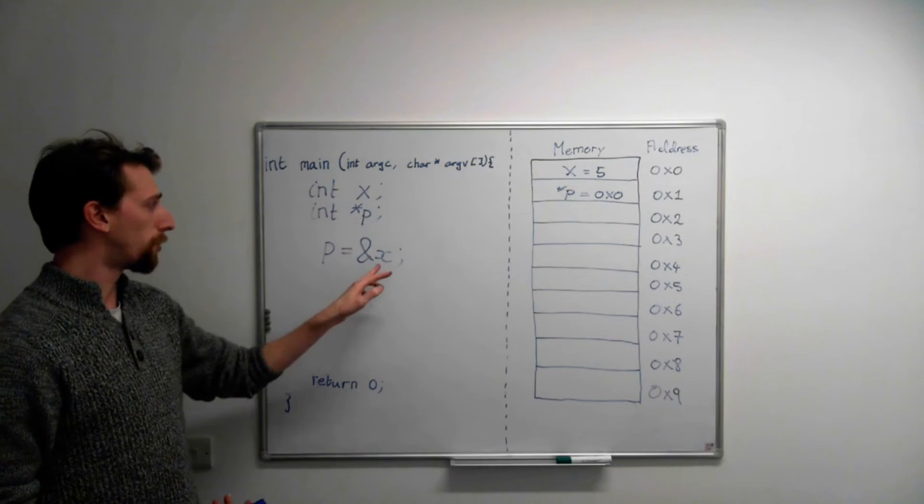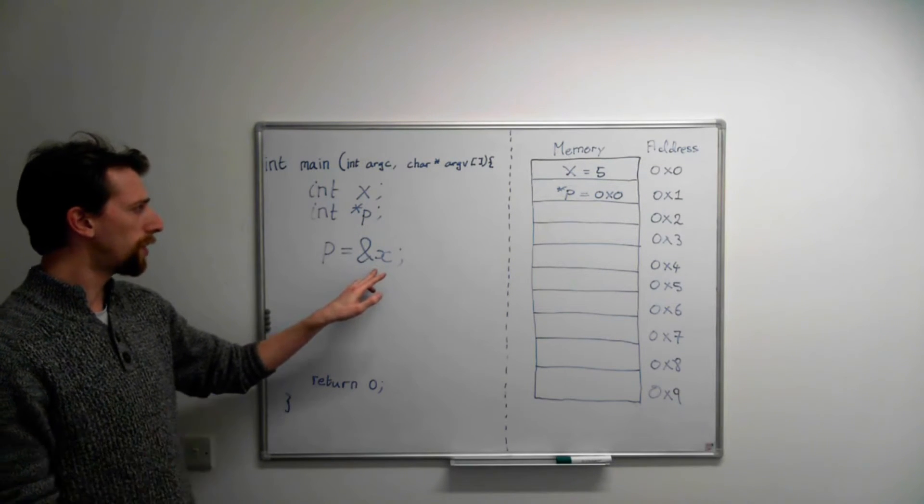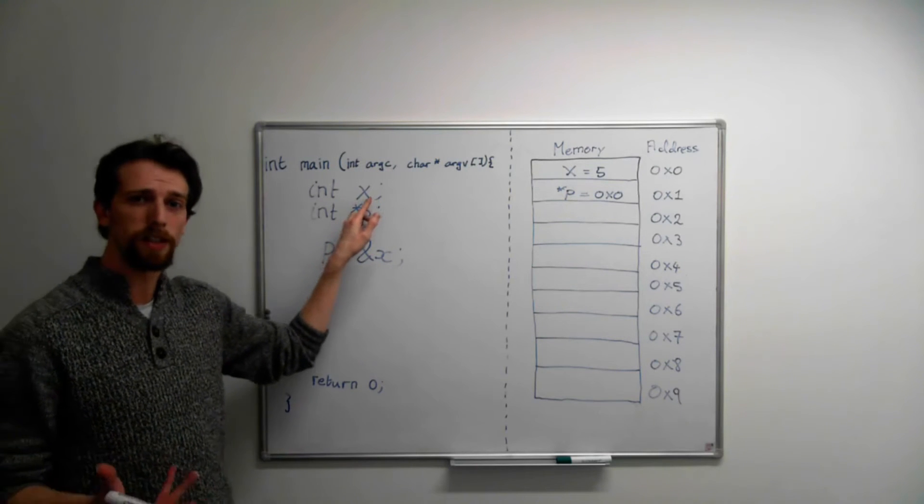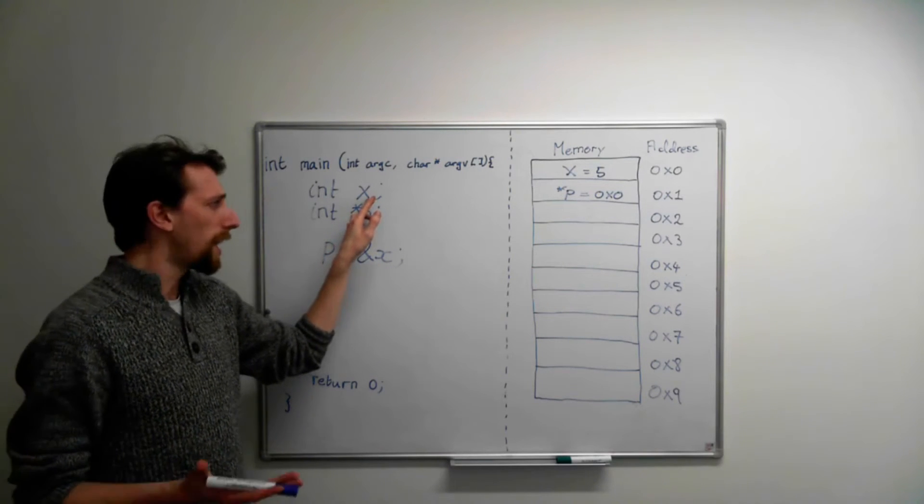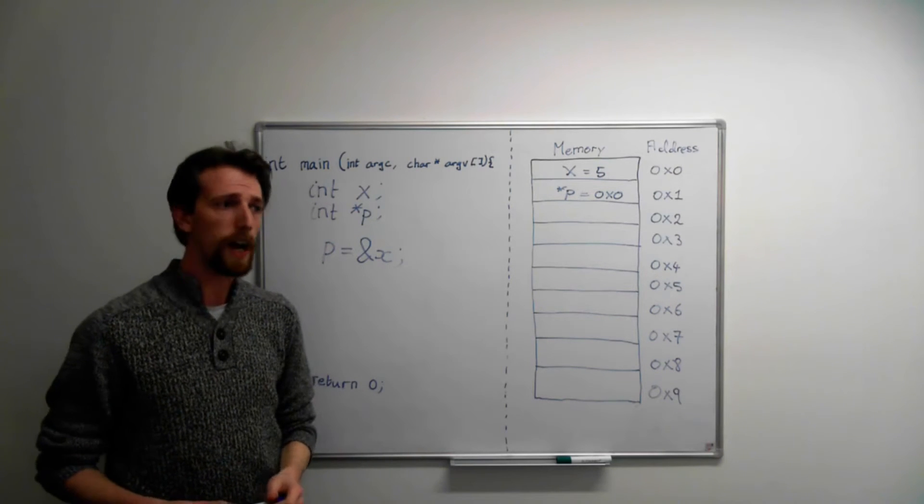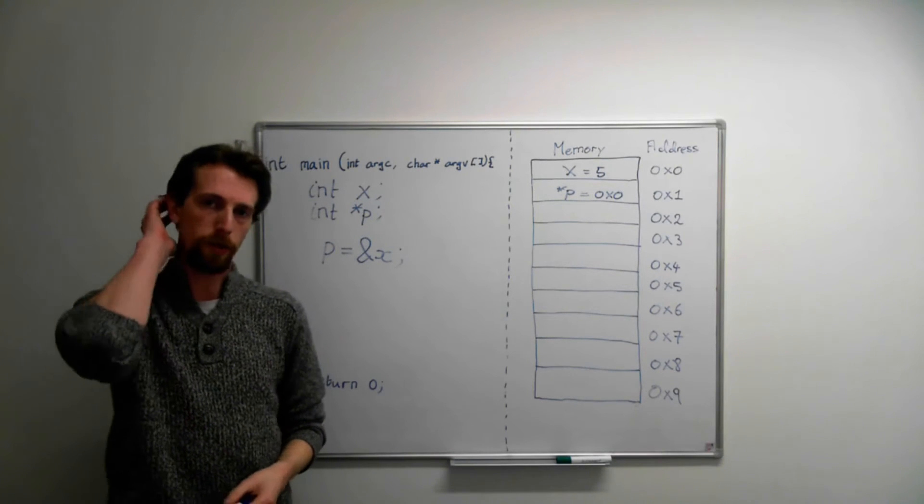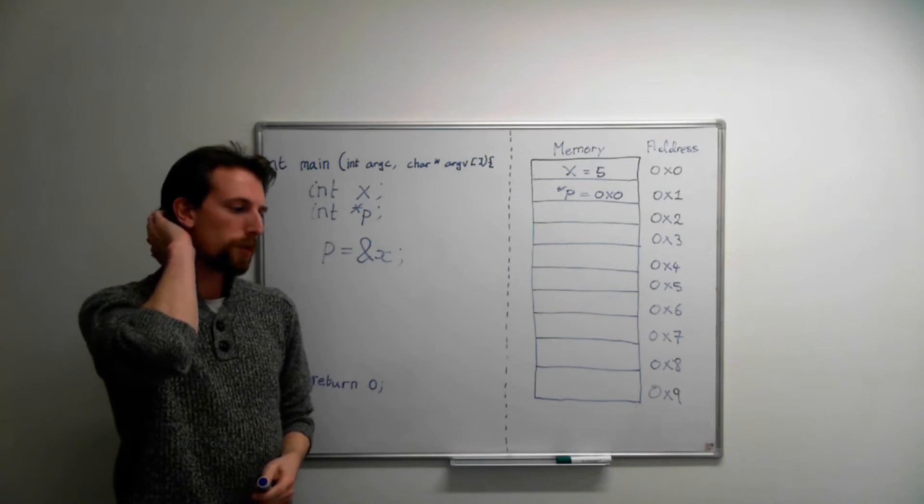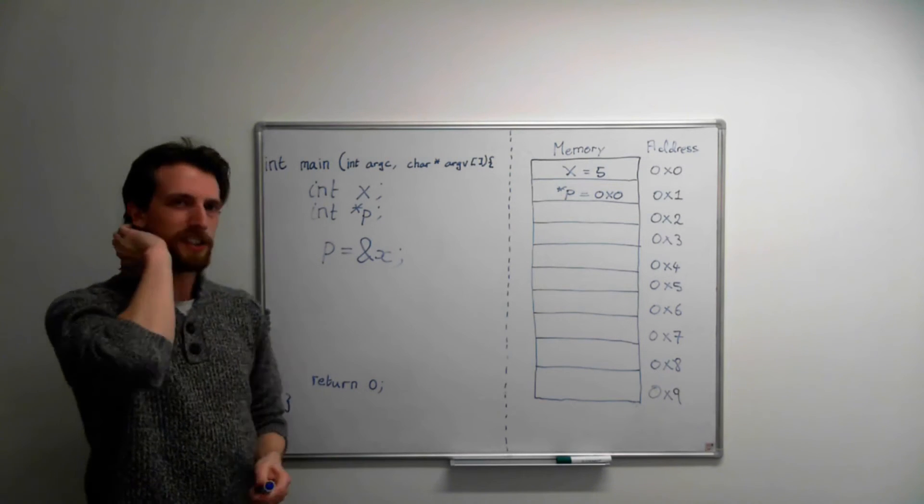Using pointers to point to a value when we already know where that value is can seem pretty pointless. I guess it kind of is. I mean, there are maybe occasions where you do it. I guess you could use it to iterate over an array. But for the most part this is kind of a silly use of a pointer.